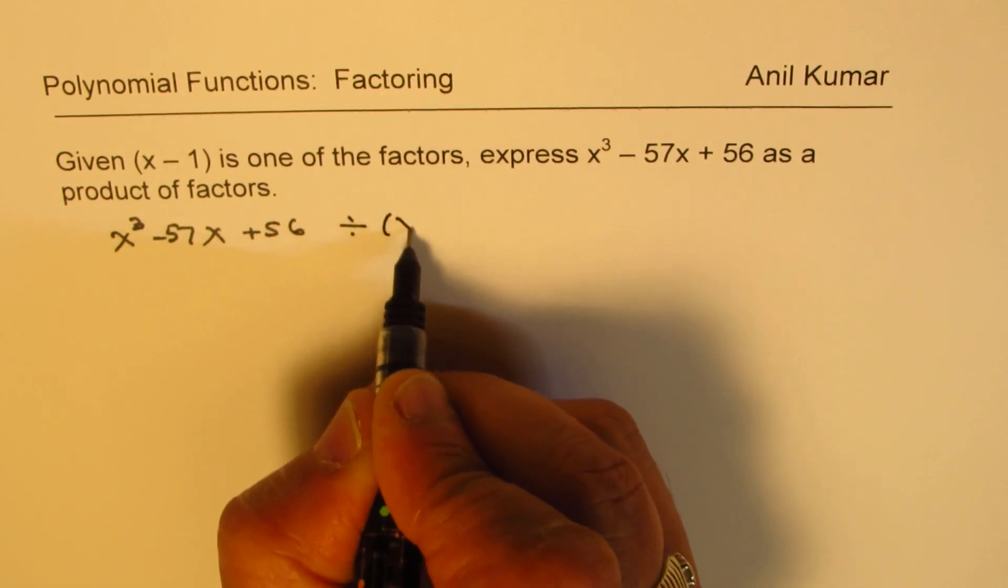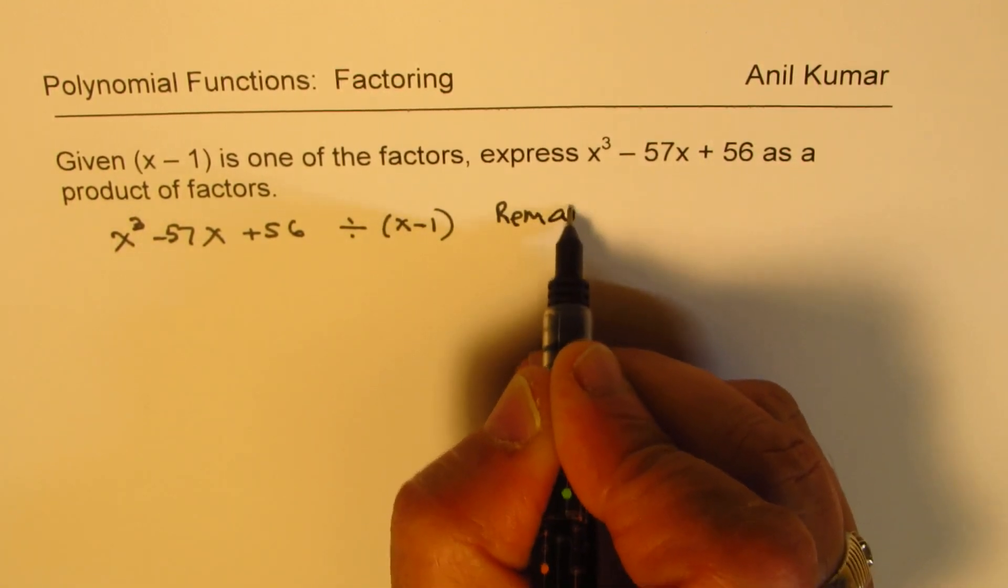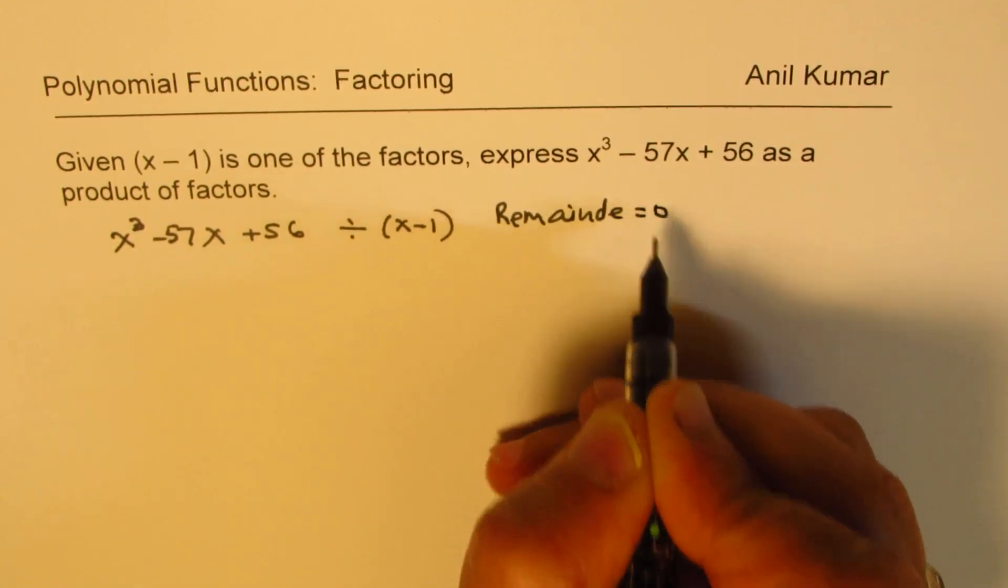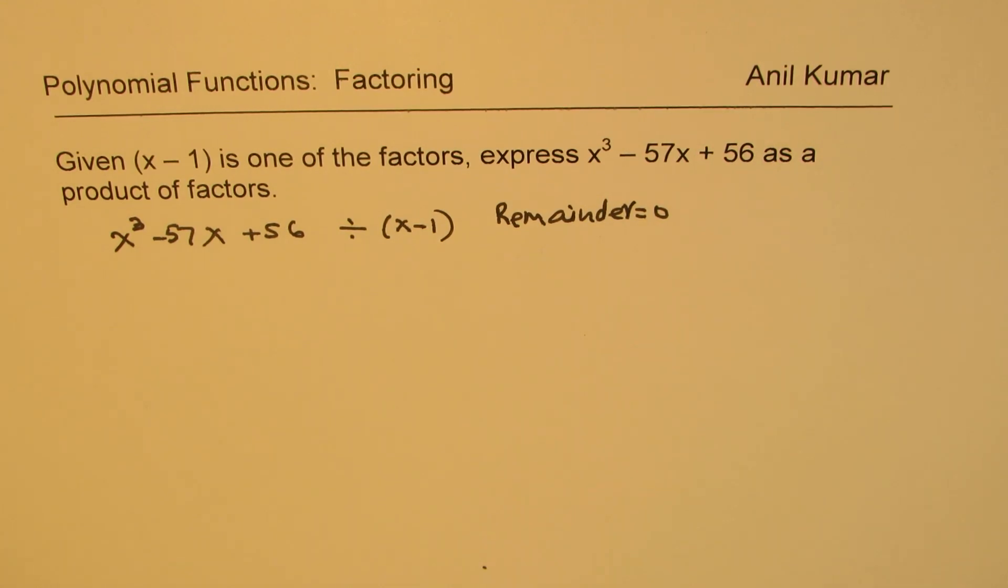Now if I divide this by x minus 1, we get remainder as 0. So that means we get the other term as a factor. That's what it means.